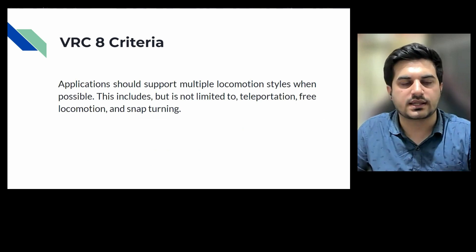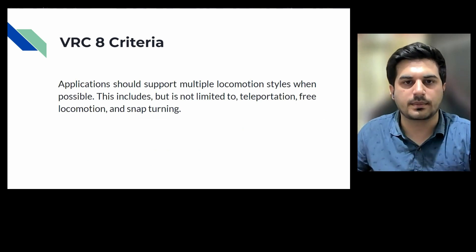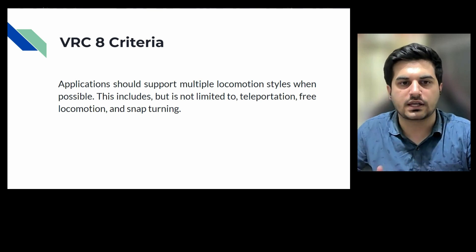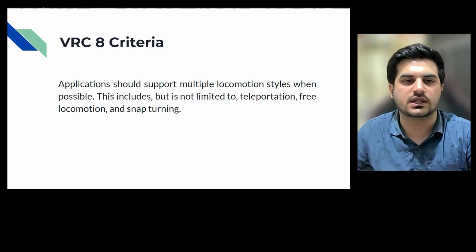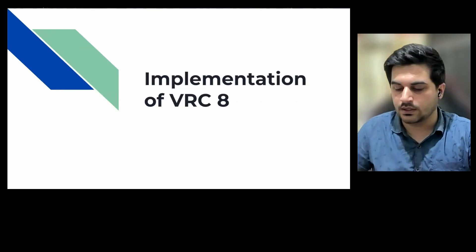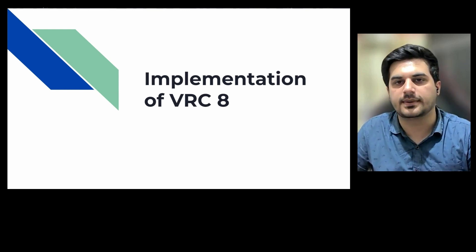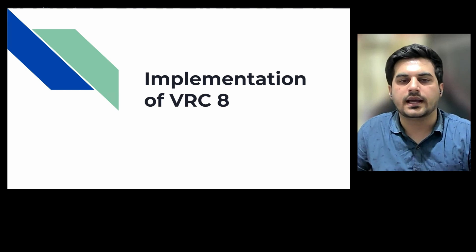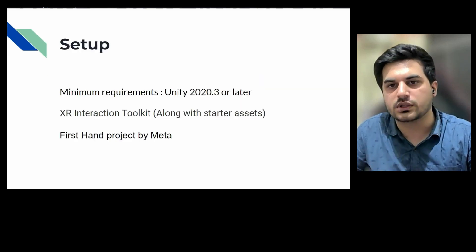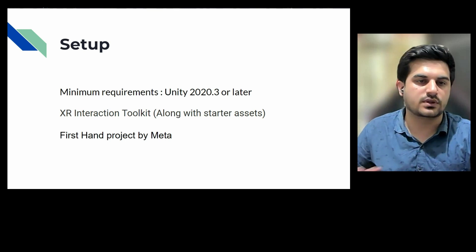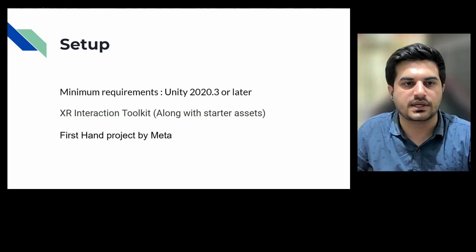For this VRC, my project was Meta Quest VRC 8. It focused on multiple locomotion styles, including but not limited to teleportation, free locomotion (direct locomotion), and snap turning. We created an open-source project available on GitHub — everything can be shared after the session. We will also be posting the link for our implementation of VRC 8 on the Equal Entry website shortly, along with the minimum requirements needed to implement the project.